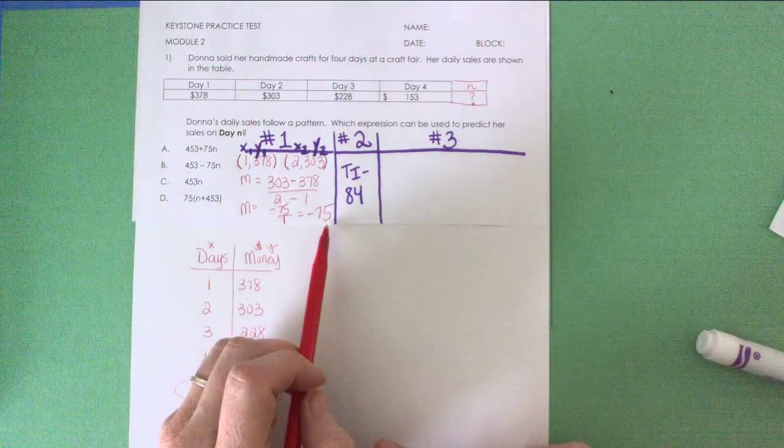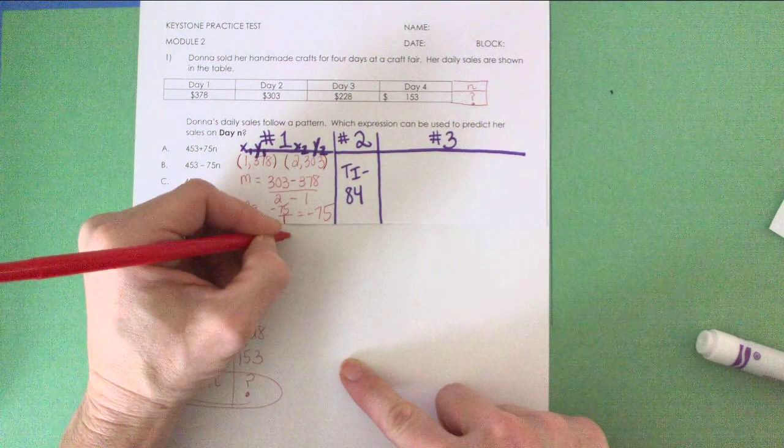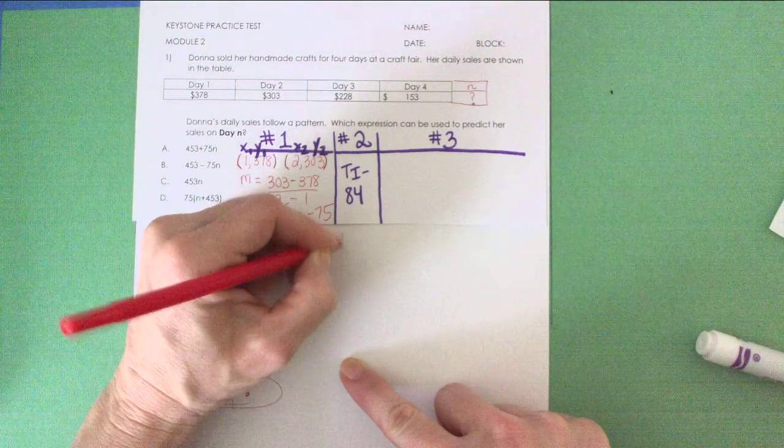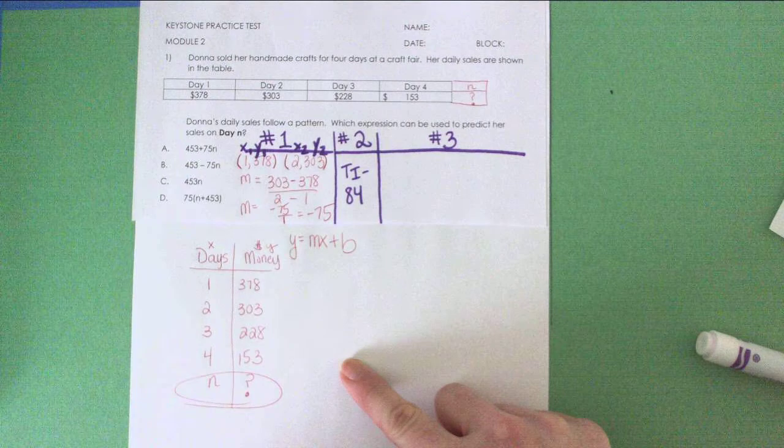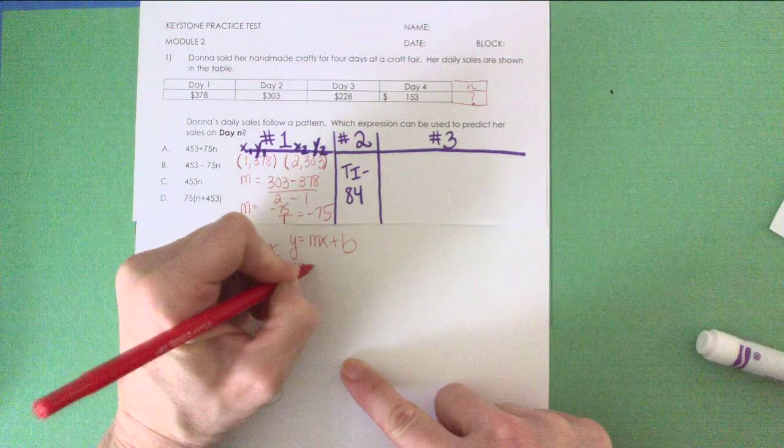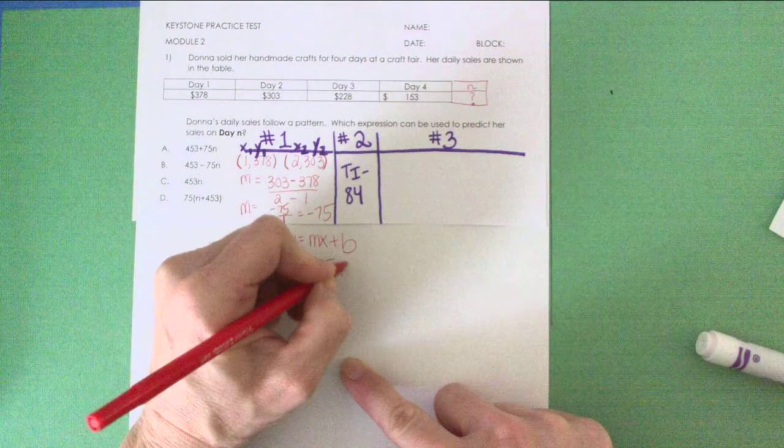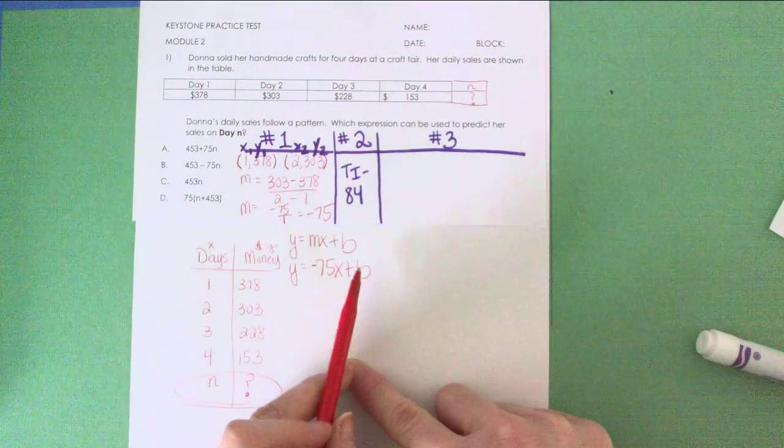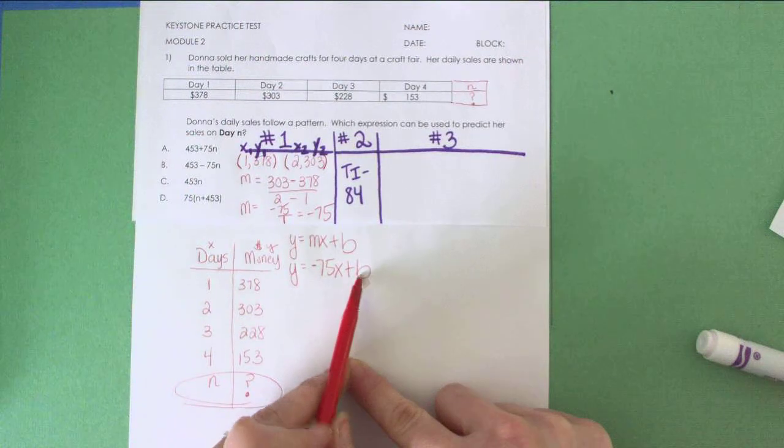Now I'm going to take that slope and insert it into my linear equation Y equals MX plus B. You worked with that a lot in Algebra 1. I'm going to go ahead and put negative 75 in for M.